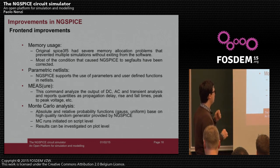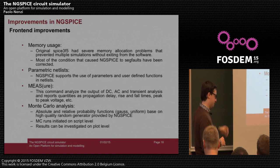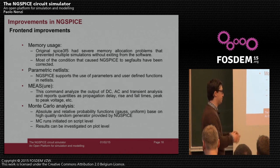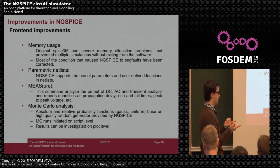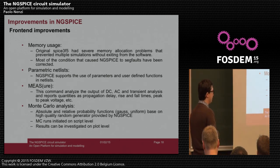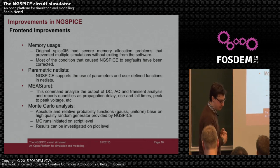With dot-meas, you specify what you want computed — for example, the propagation delay of standard cells for standard cell characterization. You pick the two points you want to measure and extract the delay, and also the derivative of the transfer characteristic. We also have Monte Carlo analysis based on our random number generator.